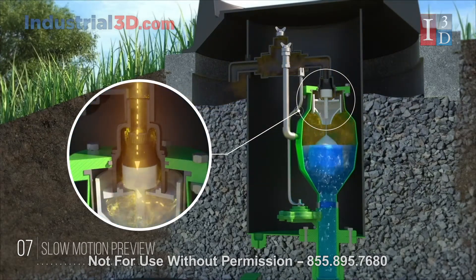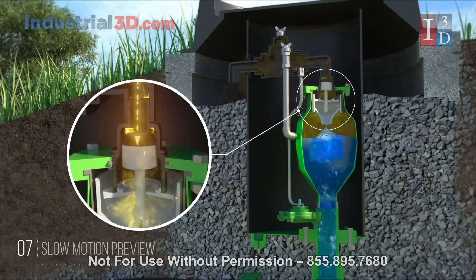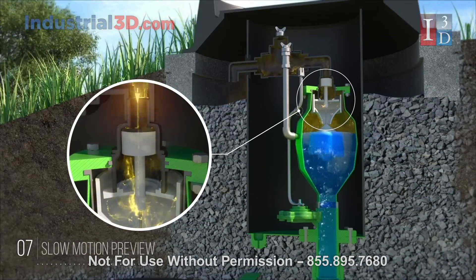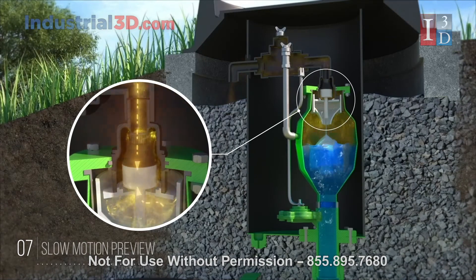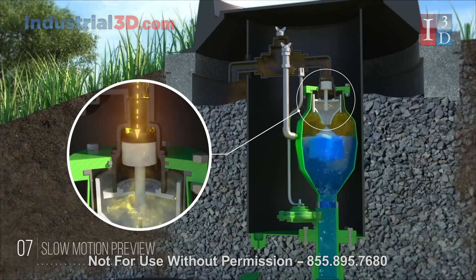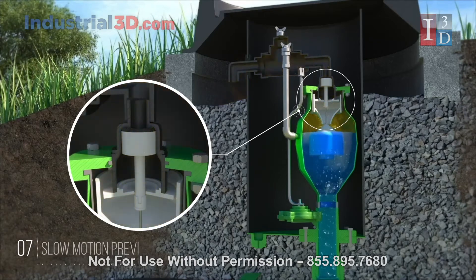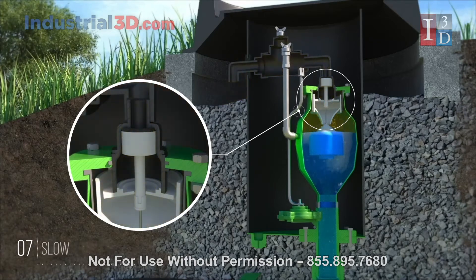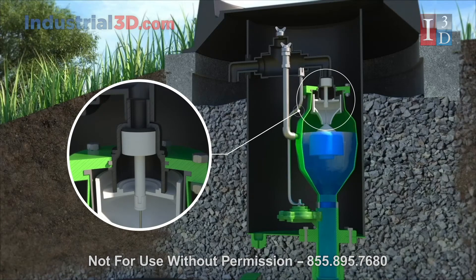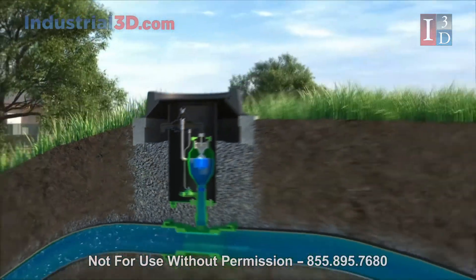During operation, the air valve is automatically removing quantities of air as needed. Now that the air pocket is removed, the flow is increased.